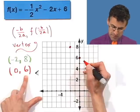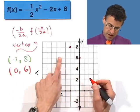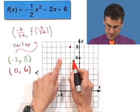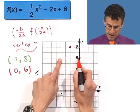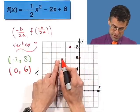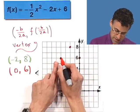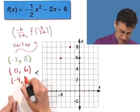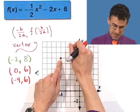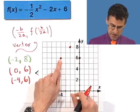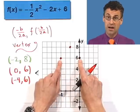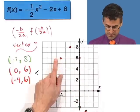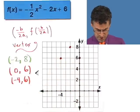By symmetry, we know there's going to be a corresponding point. If 0, 6 is two units over from the axis of symmetry x equals negative 2, then going two units the other way gives another point for free — negative 4, 6. It has to be symmetric along the x equals negative 2 line.